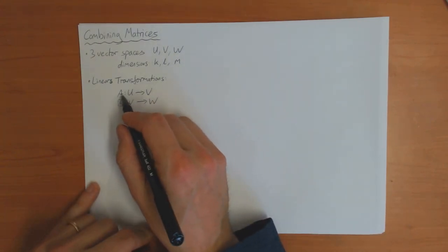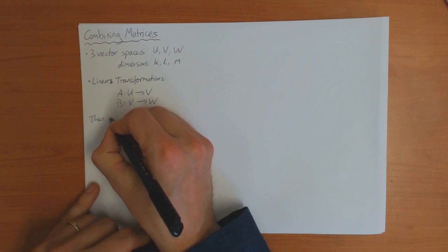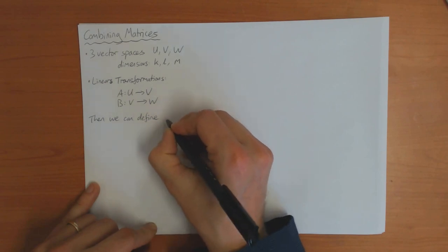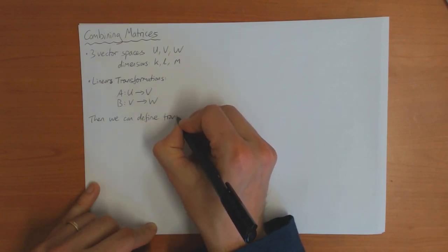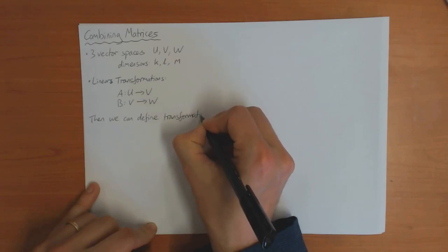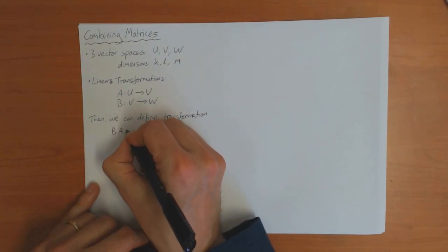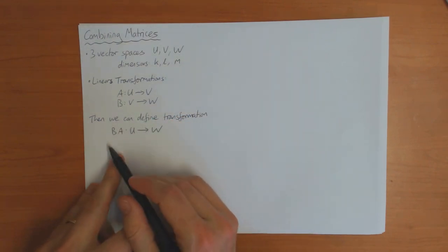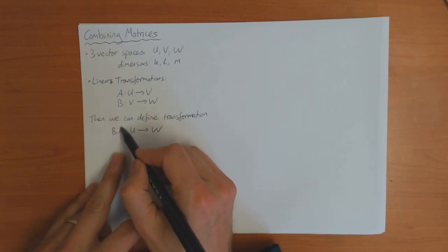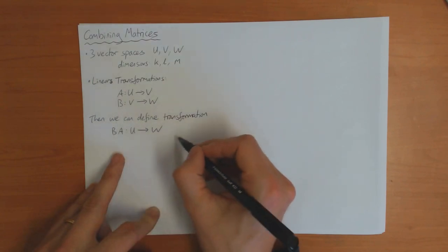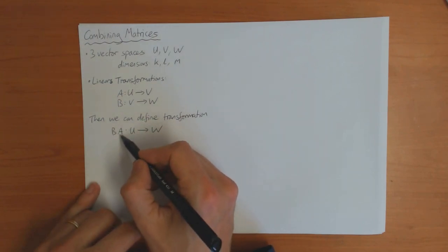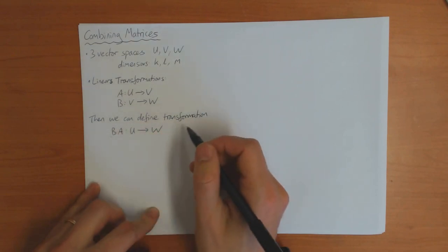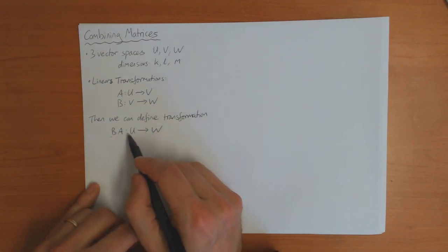We can obviously combine these two together, and define the transformation BA which goes from U into W. You have to be a little careful here: BA means you do A first and then B. You'll see the reason for writing it kind of backwards in a minute.